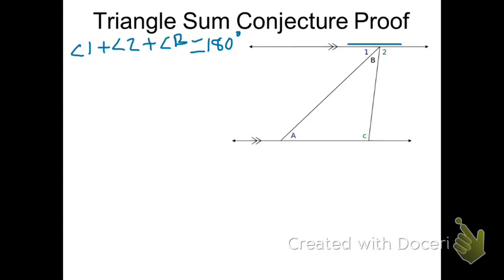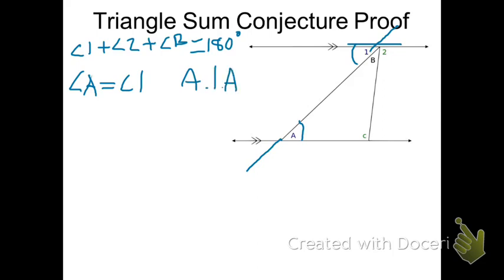Another thing we can tell from the picture is that angle 1 and angle A are congruent. If you look at the parallel lines and imagine this line extending out as a transversal, you'll see that angle A is congruent to angle 1 because they are alternate interior angles. Likewise, if we look at the other side of the triangle and extend it out as a transversal, angle 2 and angle C are also congruent because they are also alternate interior angles.